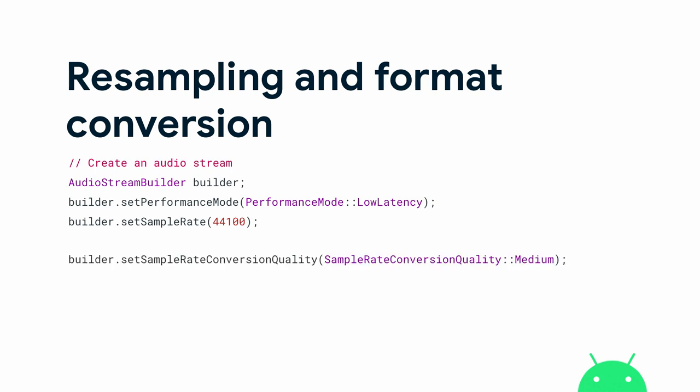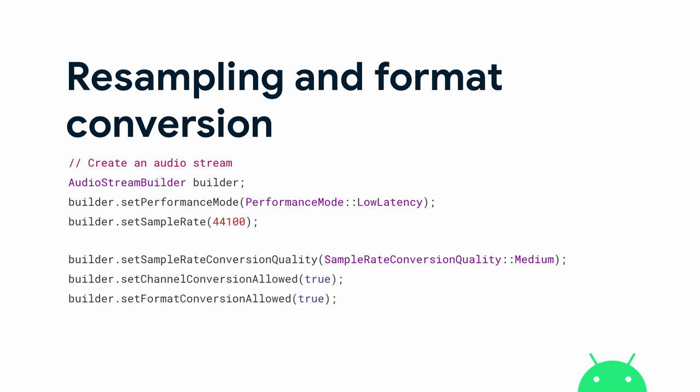Now in Oboe 1.3, we introduced a bunch of opt-in settings for an audio stream. Developers can set sample rate conversion quality to a specific quality level, or set channel conversion or format conversion to allowed. In combination, all three of these methods allow the developer to get a low-latency stream with Oboe doing all the conversion under the hood with no performance penalty other than the conversion itself.